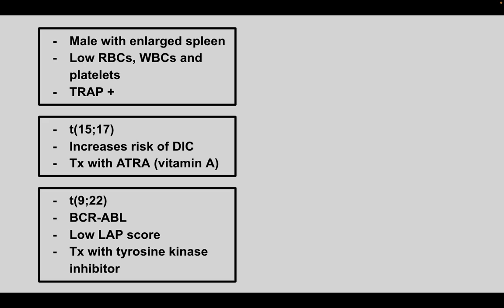Next is a male with an enlarged spleen, low red blood cell, white blood cell, and platelet counts, and a positive TRAP stain. This is hairy cell leukemia. Watch out for the hairy cells that appear on histology.